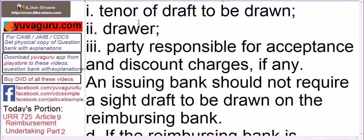Now, why is the drawer required? The drawer can be the claiming bank itself, or it can be the beneficiary directly forwarding the draft to the reimbursing bank, with the claiming bank just forwarding it. The second case is the claiming bank itself drawing the draft on the reimbursing bank. Or there can be a separate bank on whose behalf the claiming bank is claiming. So the drawer can be that separate bank. Any of these cases are possible - that's why the name of the drawer must be written compulsorily if the reimbursing bank is to accept a time draft.